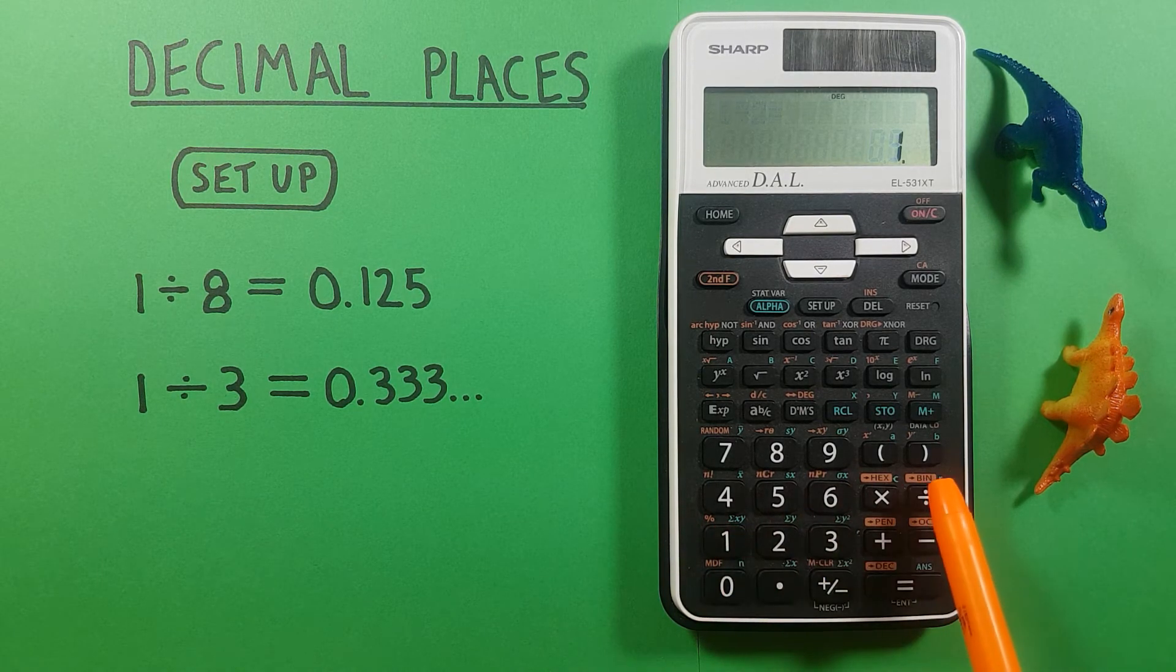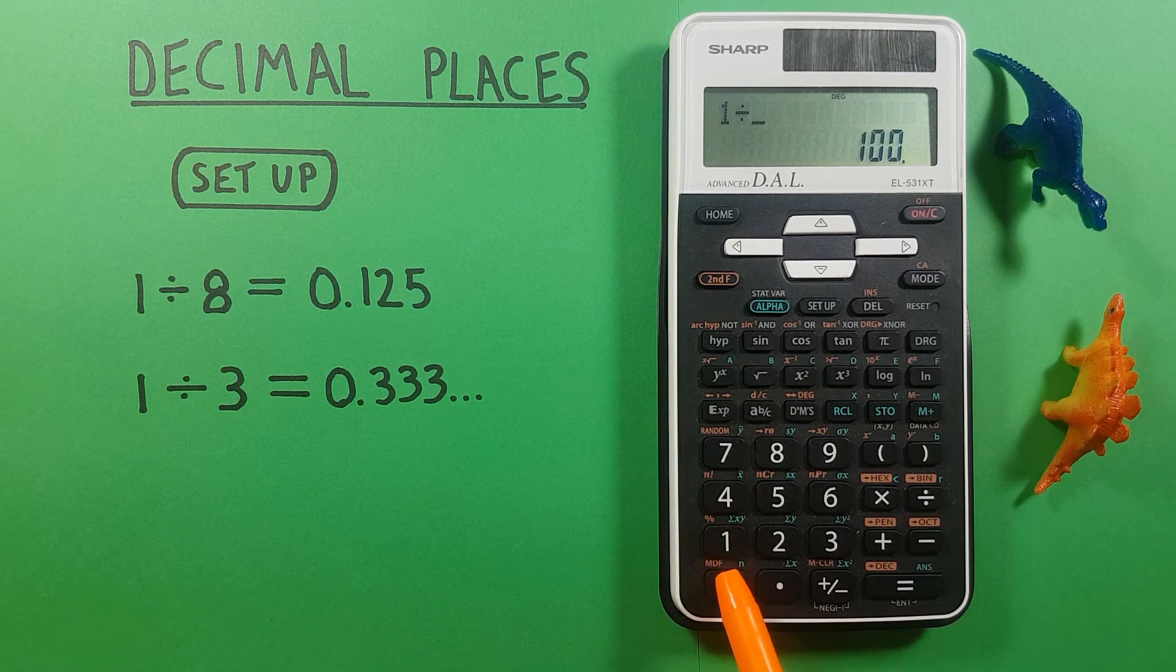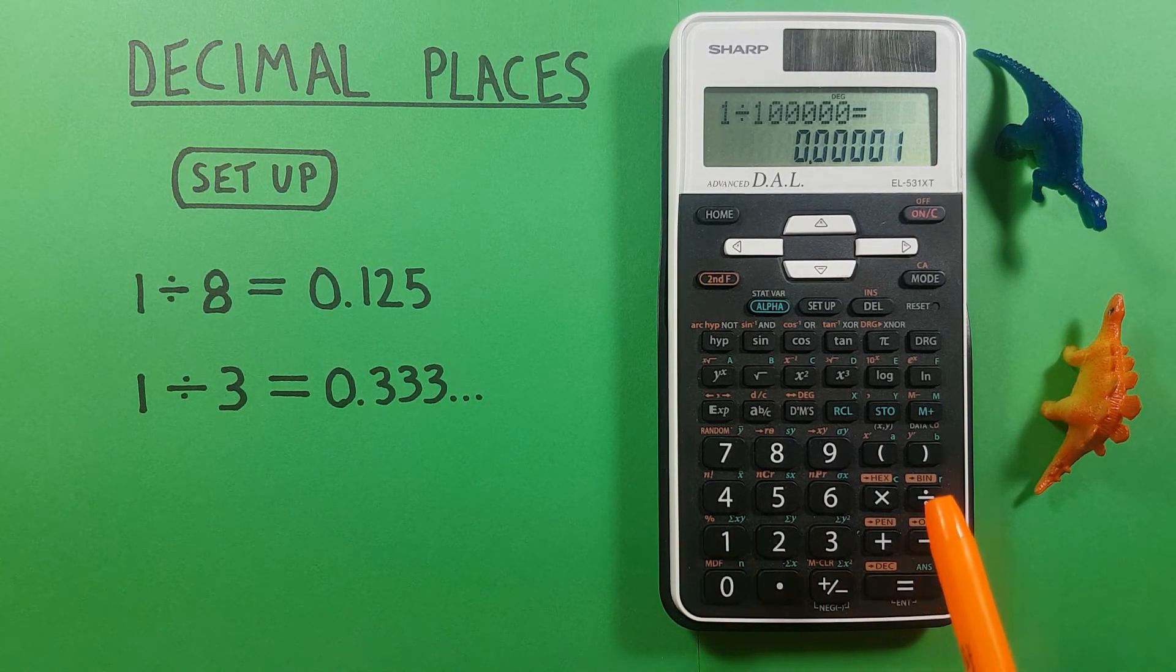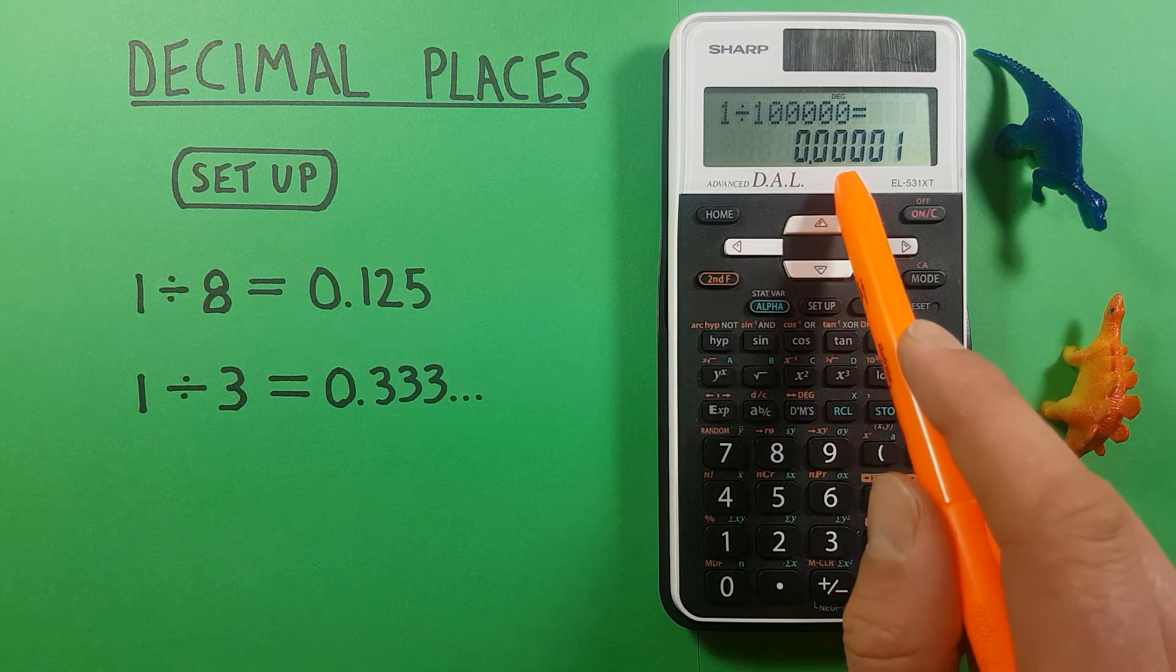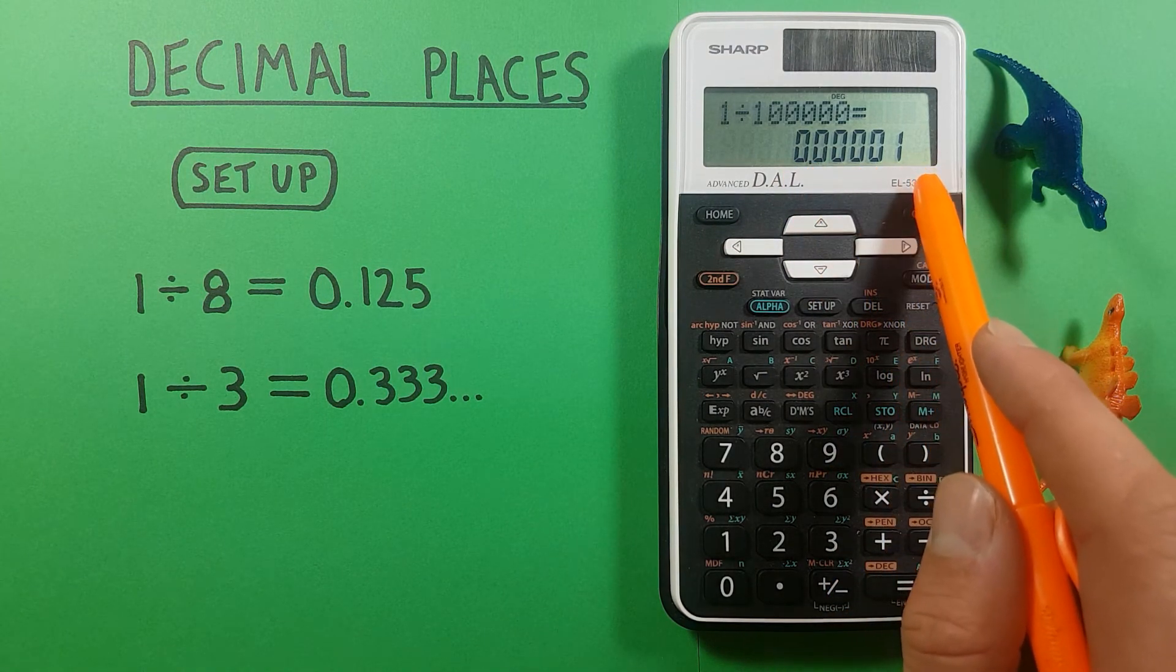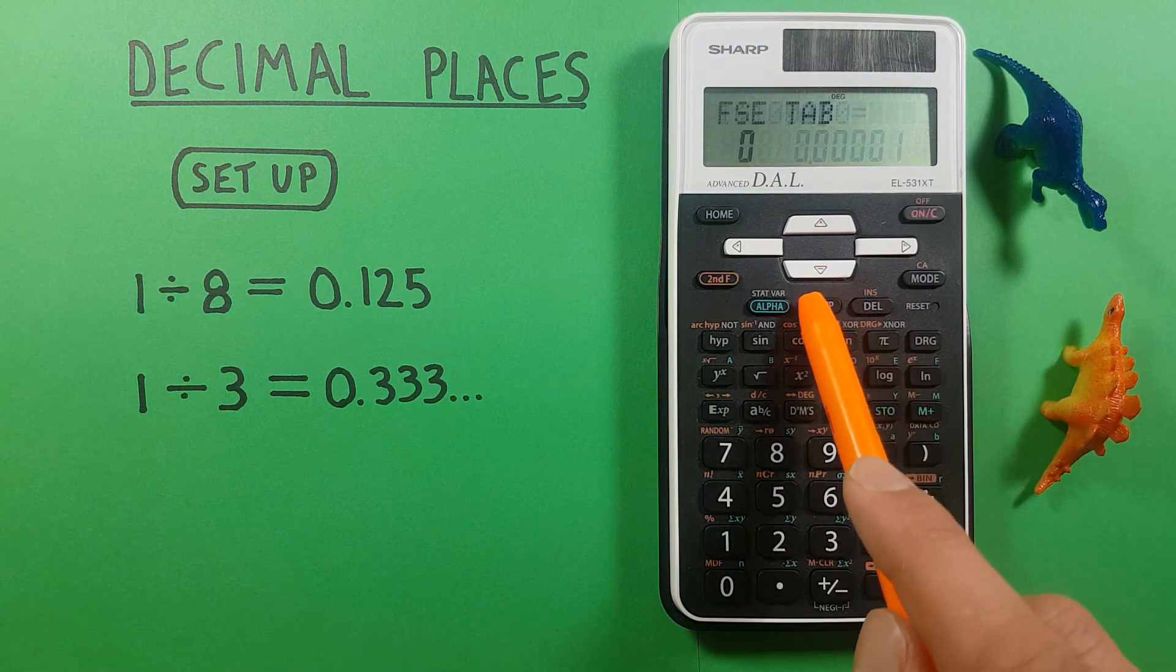An example would be if we go one divided by 100,000 you see we get 0.00001 but if we're in normal two mode